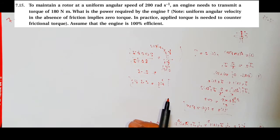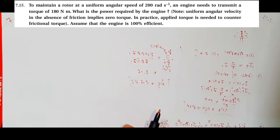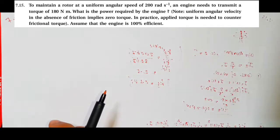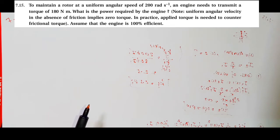Hello students, example 7.15, exercise example 7.15. Look at the question: to maintain a rotor at a uniform angular speed of 200 radians per second, an engine needs to transmit a torque of 180 Newton meters. Here is omega and torque value. The power required by the engine we have to define, and assume that the efficiency is 100%.